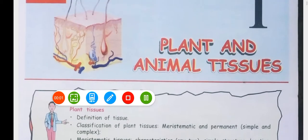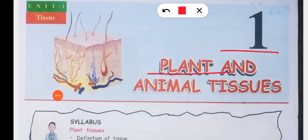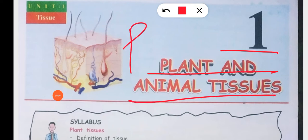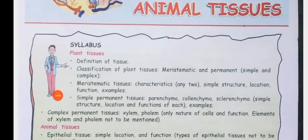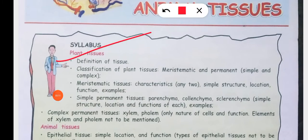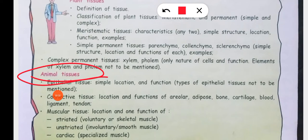Hello students, I am back with Chapter 1, Plant and Animal Tissues, Part 2. In Part 1, we discussed the definition of tissues, classification, meristematic tissues, and simple permanent tissues. In this part, we will discuss animal tissue, but before that, Activity 2 and Activity 3 are very important, so we will discuss those first.